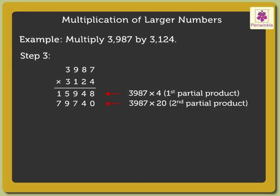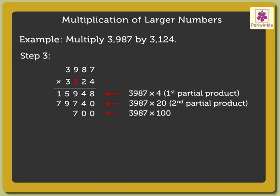Step 3: Multiply 3,987 by the digit in the hundreds place of the multiplier. As the digit 1 is in the hundreds place, we are actually multiplying by 100. So, we write 0s below both the digits 4 and 0 of the second partial product. Next, 7 into 1 is equal to 7. 8 into 1 is equal to 8. 9 into 1 is equal to 9. 3 into 1 is equal to 3. So, we get 3,98,700 as the third partial product.